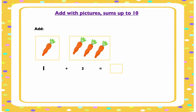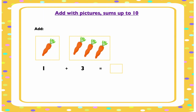There are two groups of carrots. The first group has only one carrot and the second group has three carrots. How many are there altogether? Let's count them and find out: one, two, three, four. The sum of one and three is four.